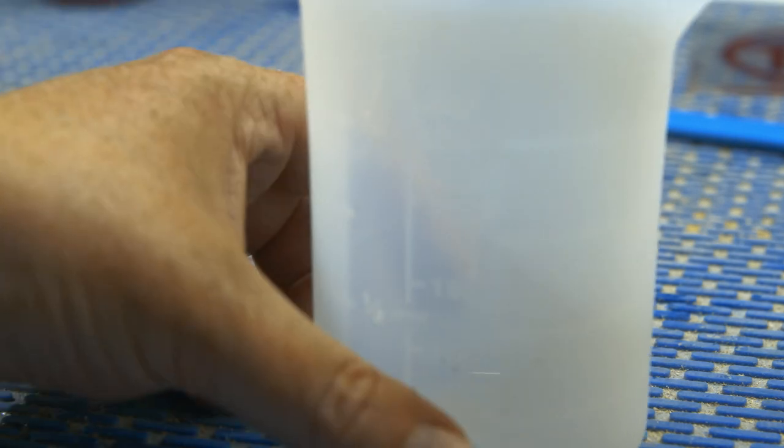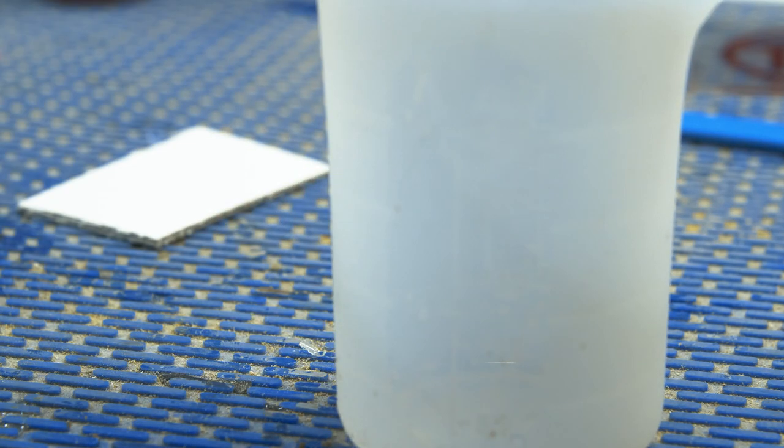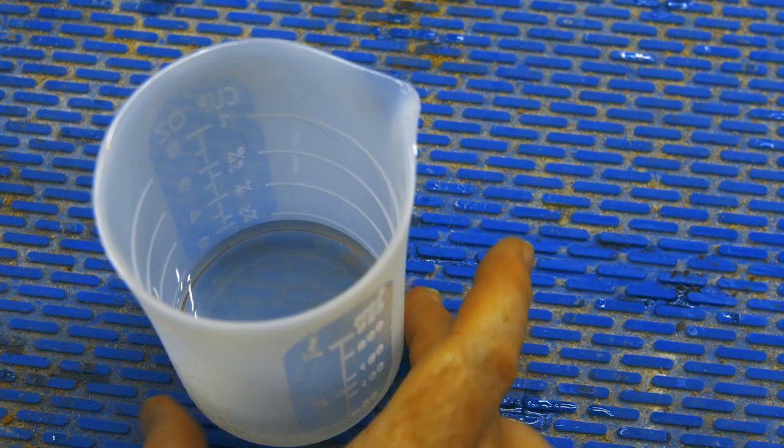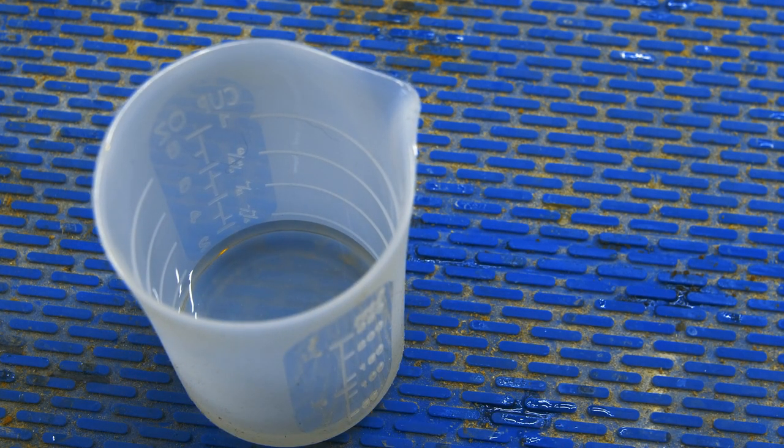The larger cup has a smoother finish, which makes seeing the graduation markings noticeably easier. But there's fewer of them, so it's not ideal for smaller pours.